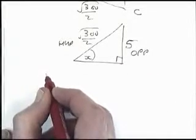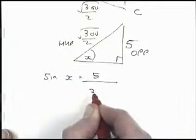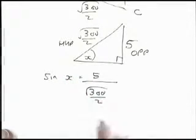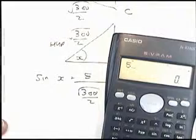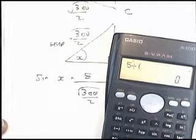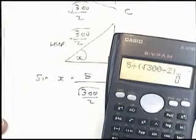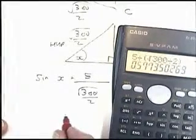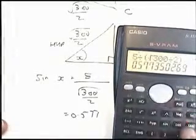Sine is opposite divided by hypotenuse, so sine of x is going to be five divided by half of root 300. So on the calculator, I'm doing five divided by, I'll put the bottom bit in brackets, root 300 divided by two, close brackets. So I'm getting 0.577 for sine of x. If I do shift sine of that, I'm getting 35.26 for x.